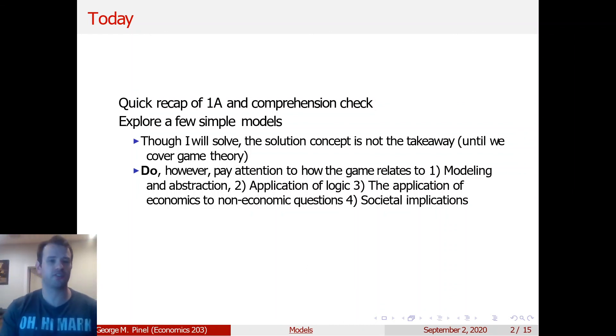And then the fourth would be the societal implications of a model and also the societal implications of the abstractions and the assumptions that you make in a model and how they, if you make too many abstractions, how that might actually affect society if you presume that the model is a thousand percent correct.